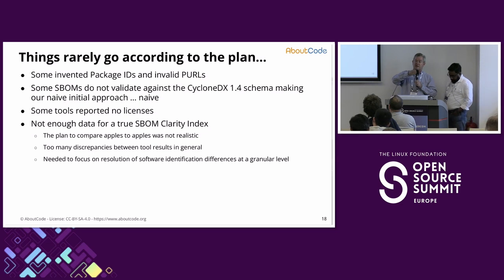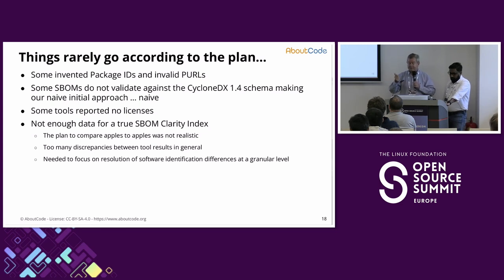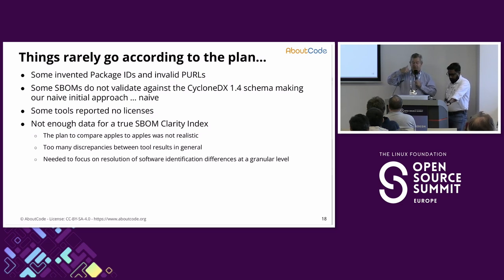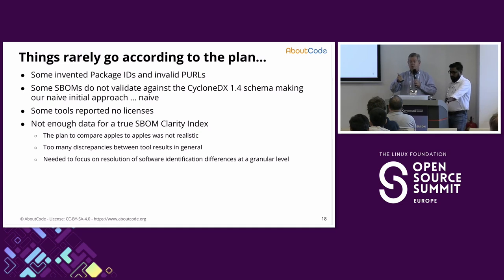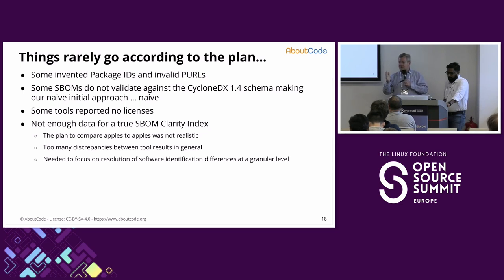In the end it worked out fairly poorly. When comparing whether package A appeared in the output of two different tools, very often they were not creating the same Package URL or the same package identifier — making comparison difficult even though they were potentially referring to the same thing. Even more basically, having valid JSON for an SBOM output was problematic, or matching the SBOM to its schema failed. Every step required adjustment and massaging of data.